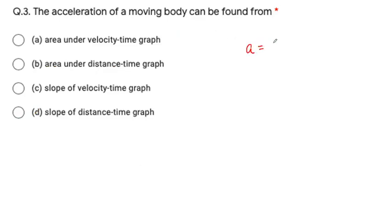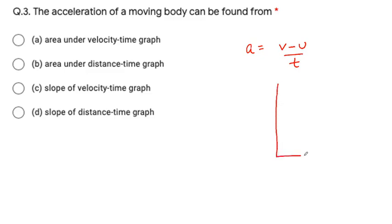Distance is a scalar quantity and displacement is a vector quantity, but their dimensions are the same. Similarly, speed and velocity have the same dimension. So option D is the correct option for this question.